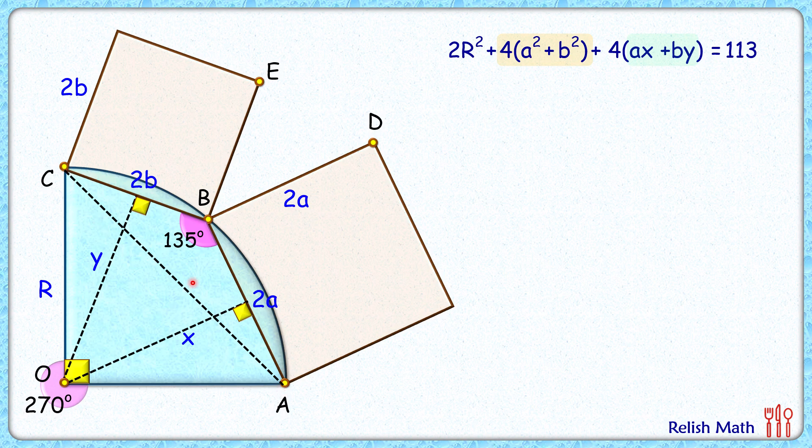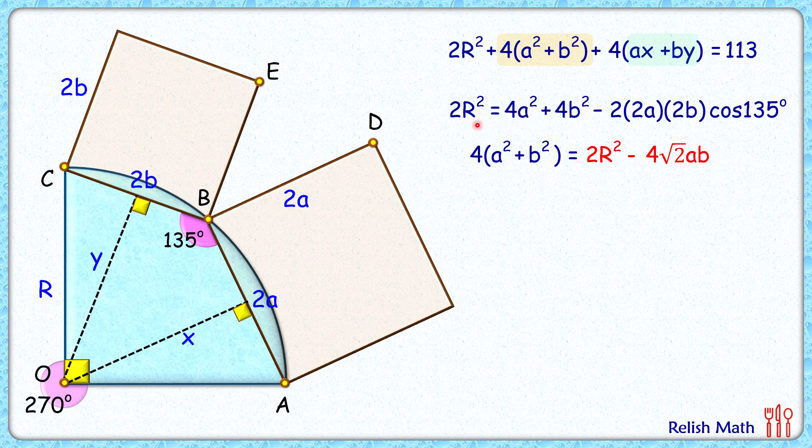Now OC length is r cm, OA is r, and by Pythagorean theorem CA length will be √2r. In this triangle CBA applying cosine law, we'll get (√2r)² = 2r² = (2a)² + (2b)² - 2(2a)(2b)cos135°. Putting cos135° as -1/√2 and simplifying, we'll get 4a² + 4b² = 2r² - 4√2ab.